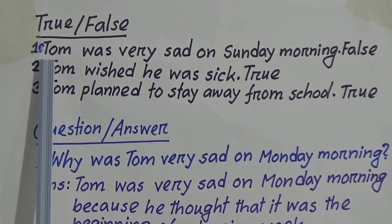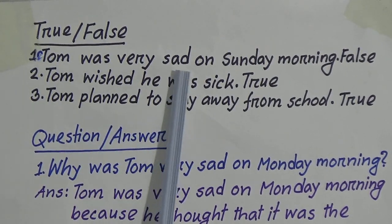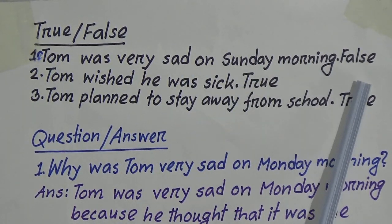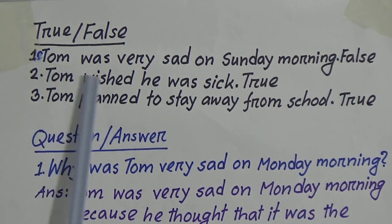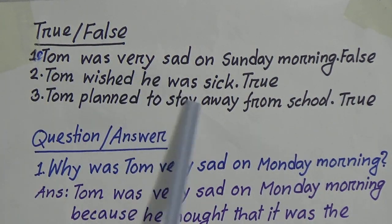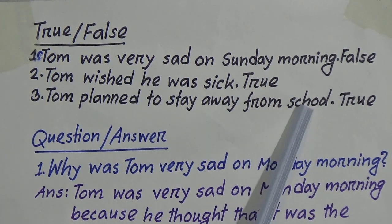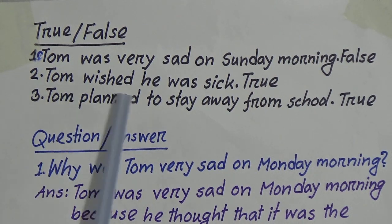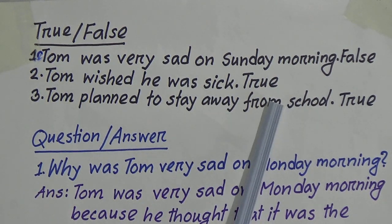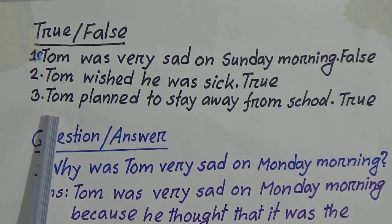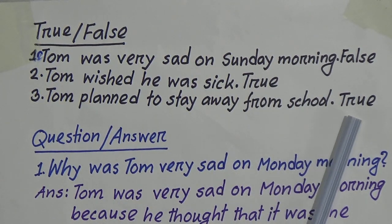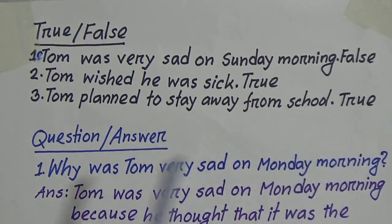Now we will move to true and false. Number one: 'Tom was very sad on Sunday morning' — False. Why false? Tom was very sad on Monday morning, that's why it is false. Number two: 'Tom wished he was sick' — True. Number three: 'Tom planned to stay away from school' — this is also true.